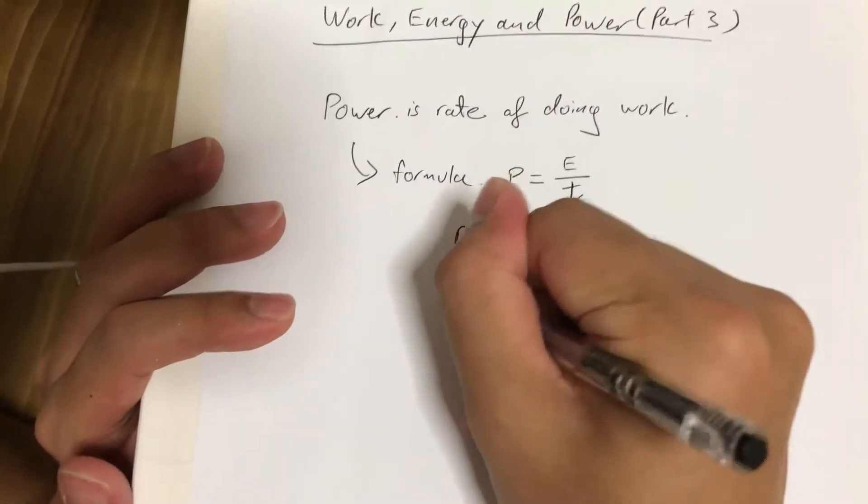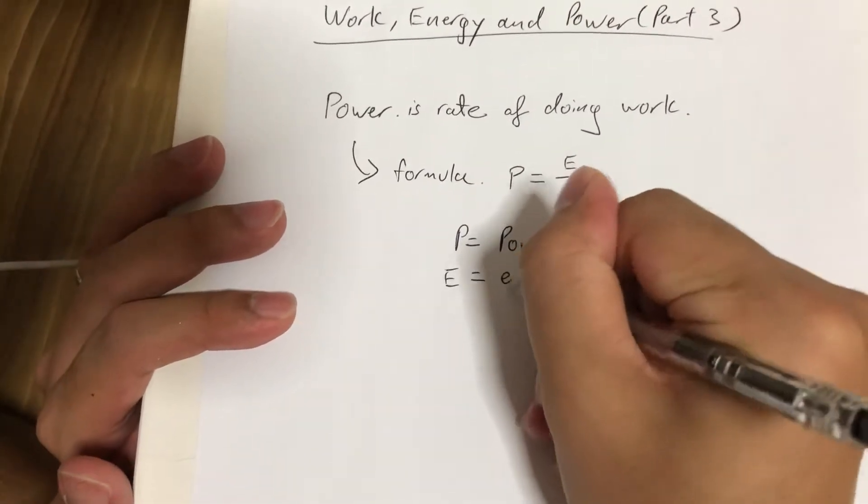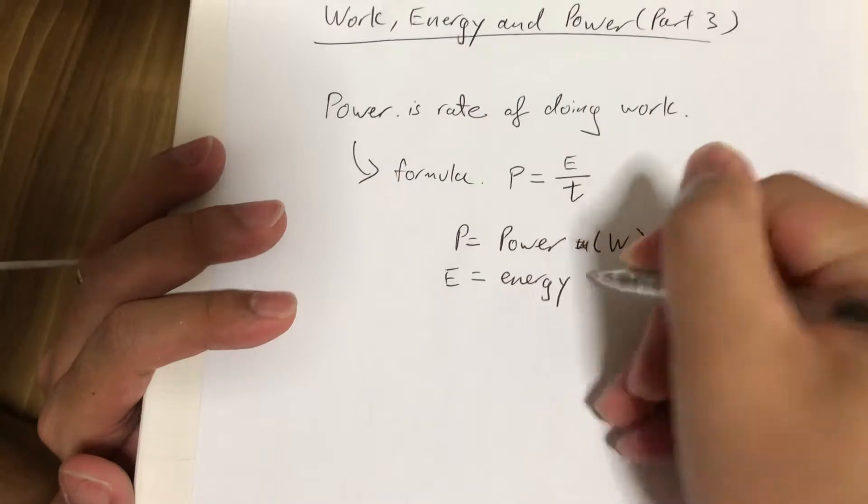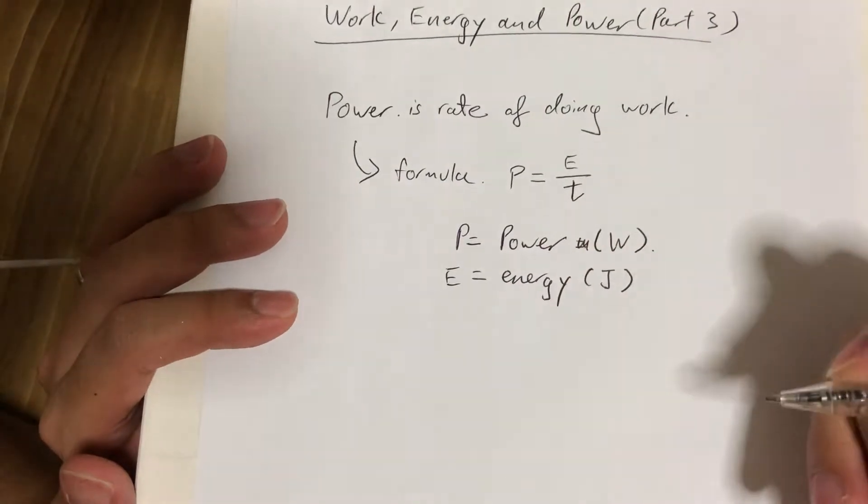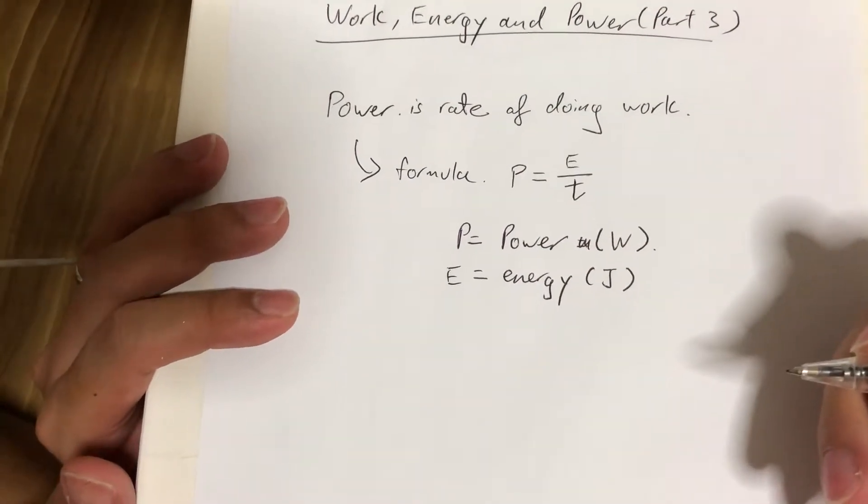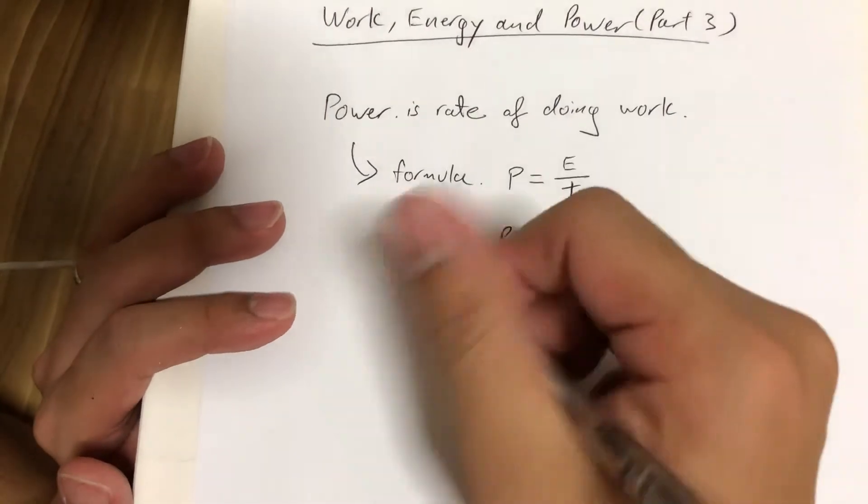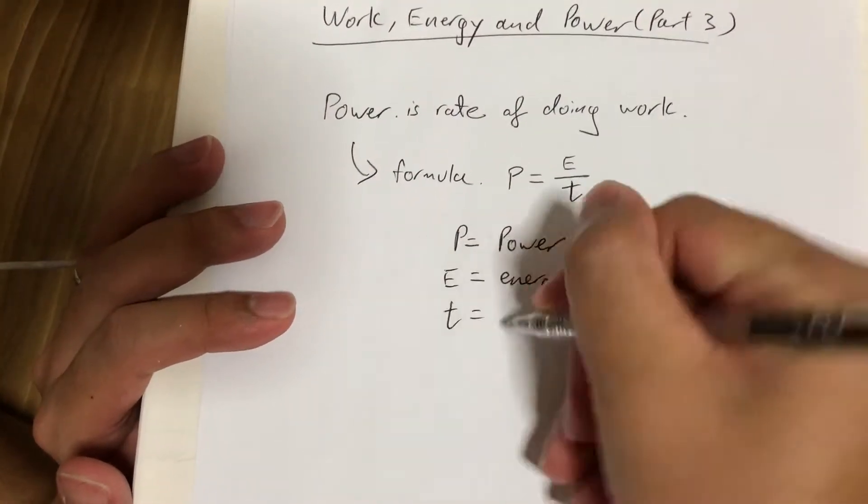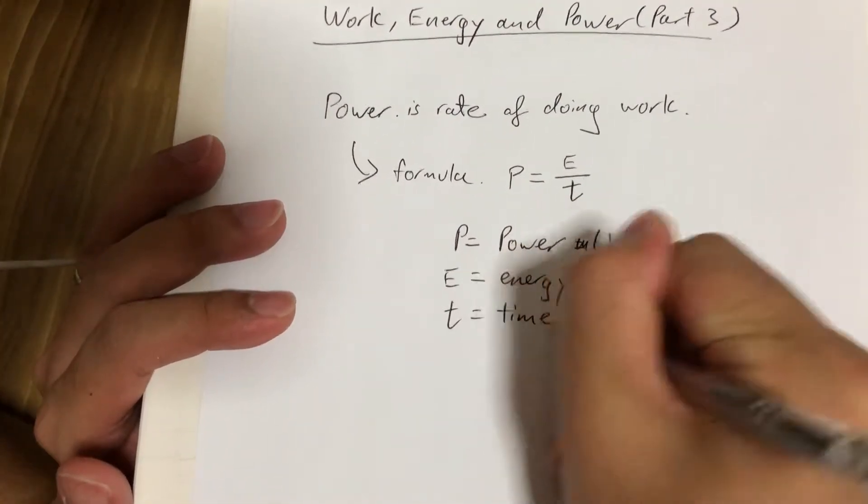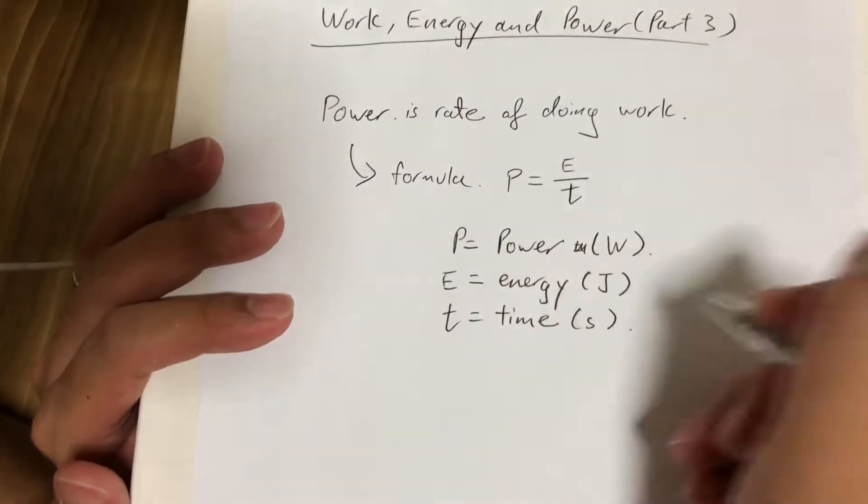Power has a very special unit and it's called the watt, symbol W. Energy, we know from our previous videos, is given by the SI unit joules, and time as usual is given by the unit seconds.